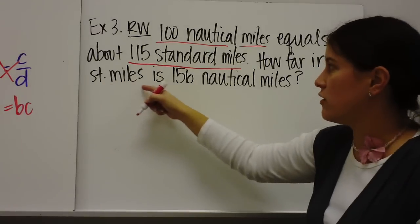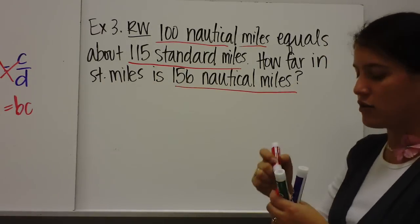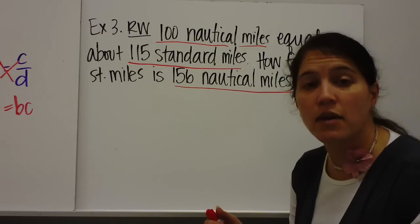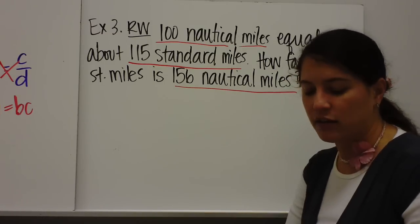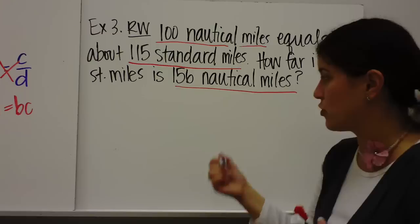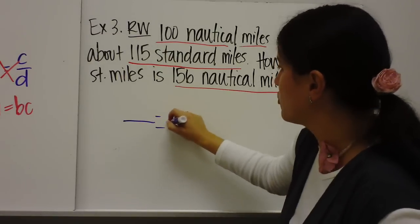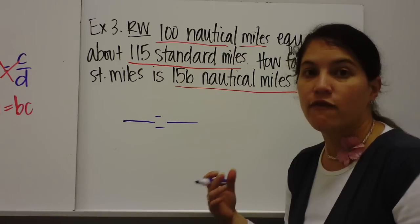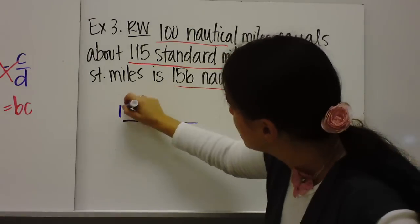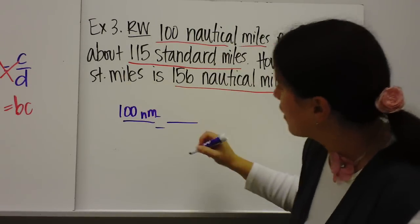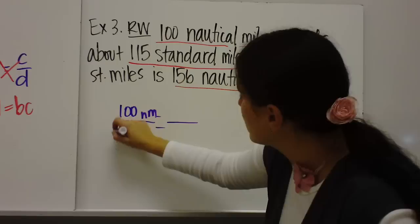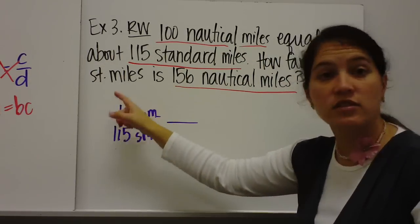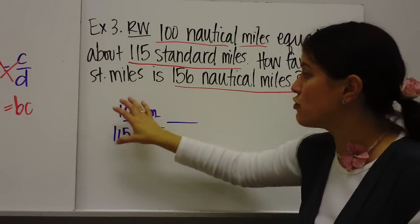Equals 115 standard miles. How far in standard miles is 156 nautical miles. So this is a proportion problem. And you might have a method to figure this out by doing something on the calculator. But let me show you how to set up and solve a proportion. So we're going to draw proportion lines. And you're going to use that ratio. The first ratio I gave you, 100 nautical miles, is equal to 115 standard miles. So I'm just using my ratio. Just like in a double number line diagram, you use your ratio.